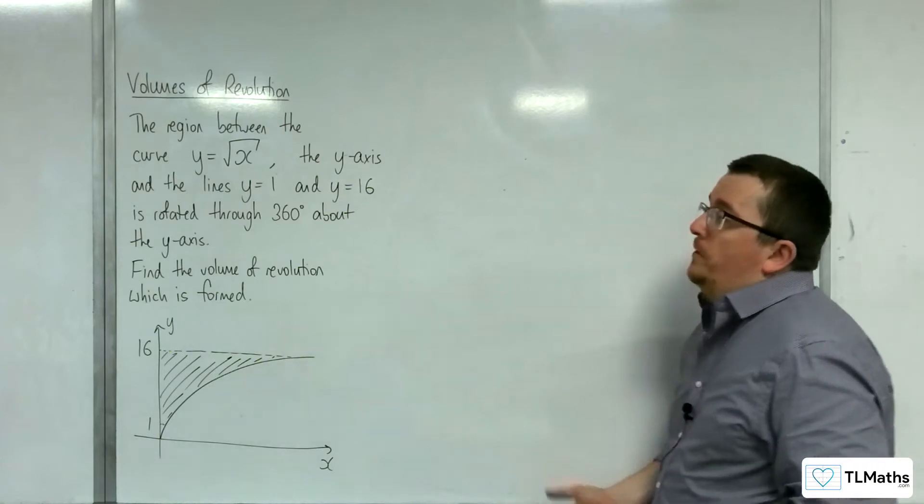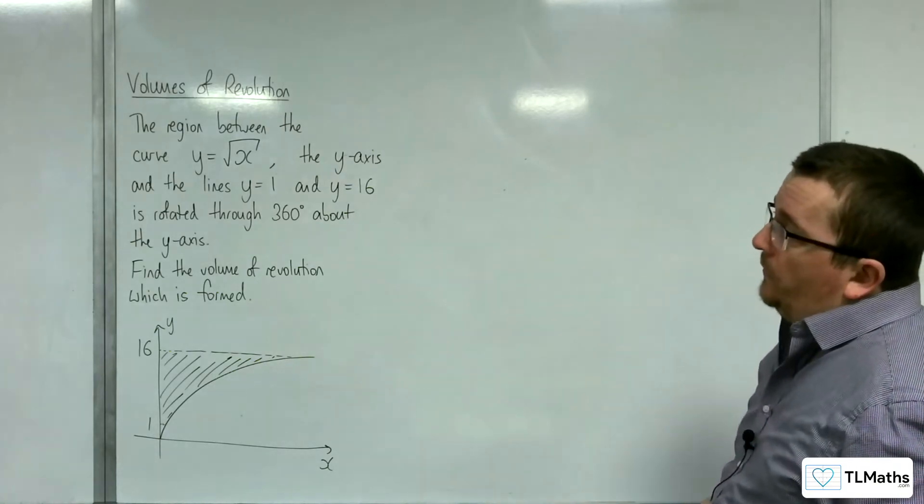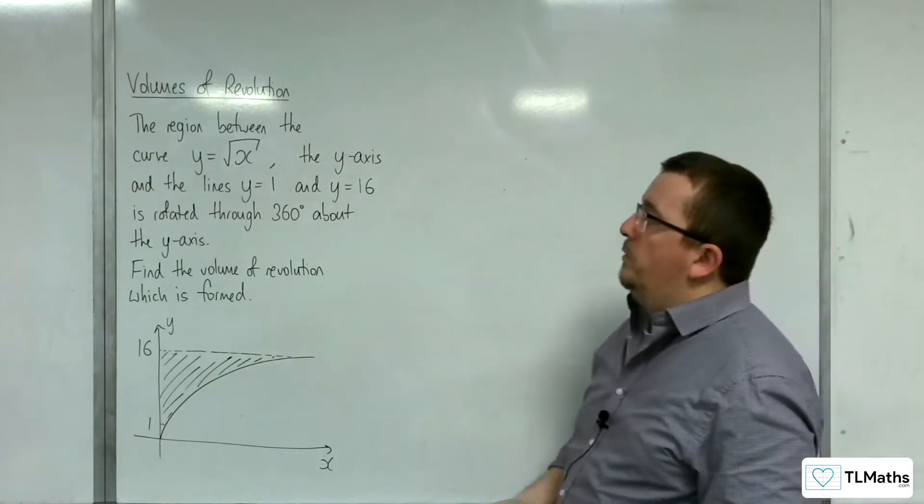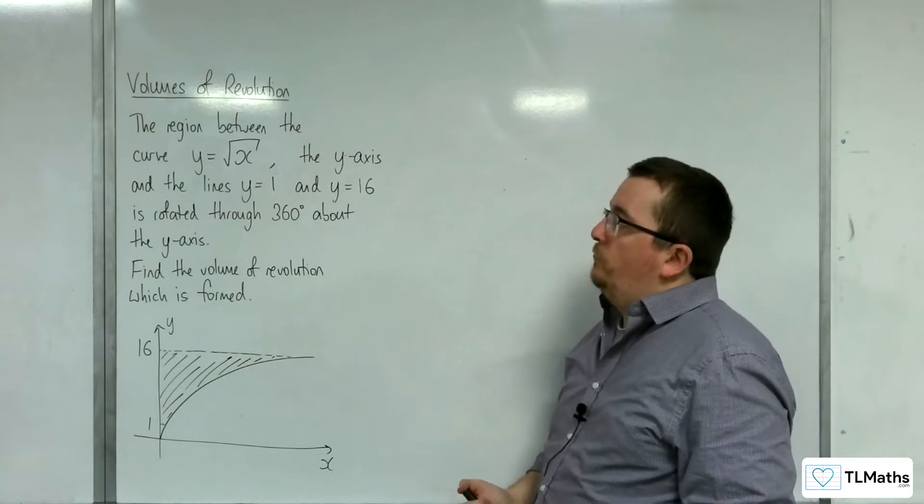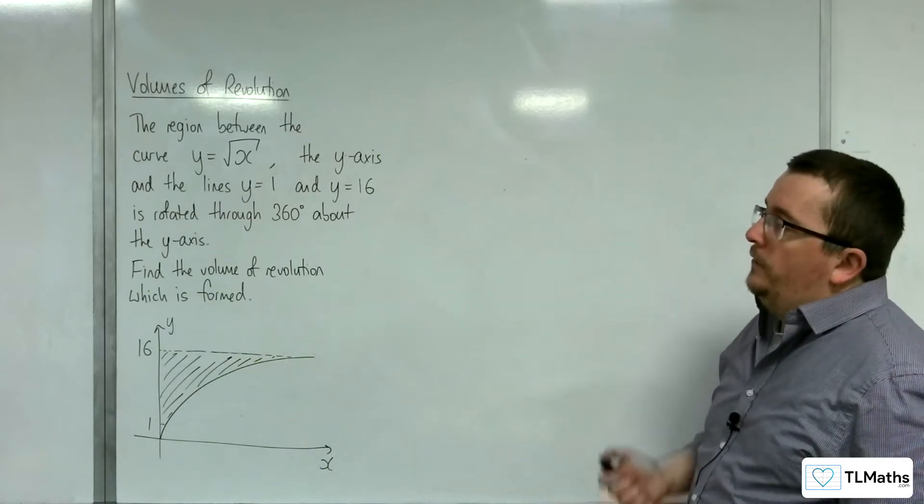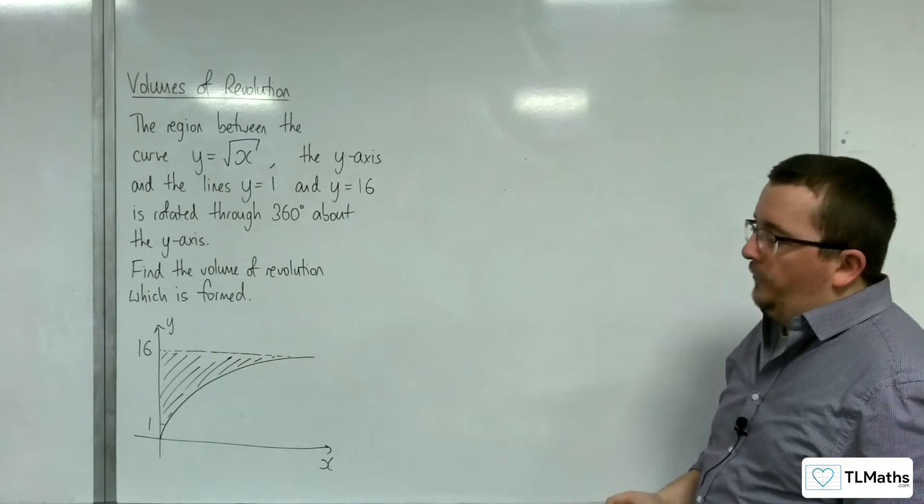In this video, the region between the curve y equals the square root of x, the y-axis, and the lines y equals 1 and y equals 16 is rotated through 360 degrees about the y-axis. Find the volume of revolution which is formed.